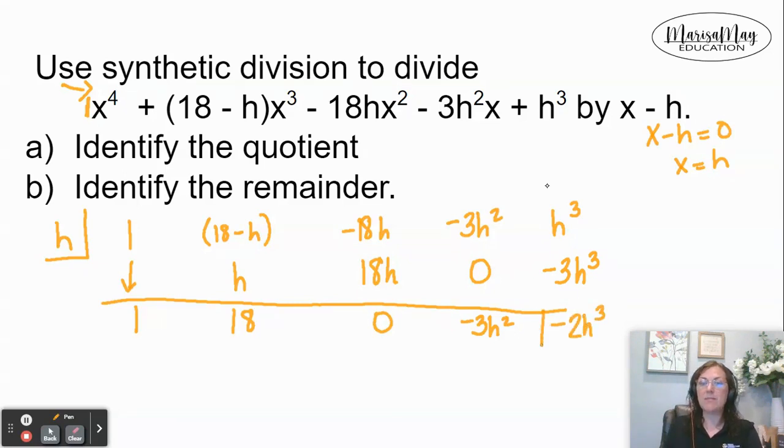All right. I've done my synthetic division now. So when I write my quotient, I know that I began with an x to the fourth and my quotient must have a degree one less than that. So I'm going to begin with this one making it 1x to the third. Remember one power less plus 18x to the second plus 0x minus 3h to the second.